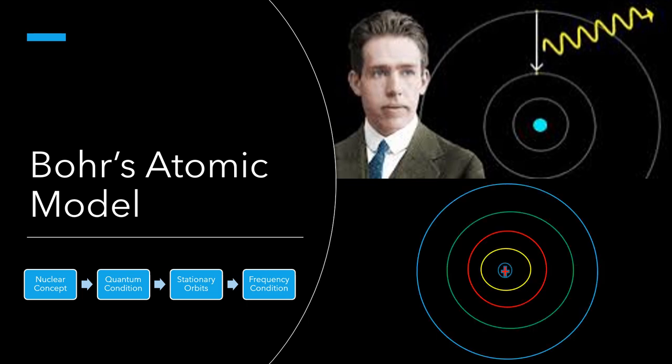1. There is a positively charged nucleus at the center of the atom around which the electrons revolve in certain discrete circular orbits. While revolving in these orbits, electrons do not radiate energy and are therefore called stationary orbits. The necessary centripetal force is provided by the Coulomb's force of attraction exerted by the positively charged nucleus on the negatively charged electron.